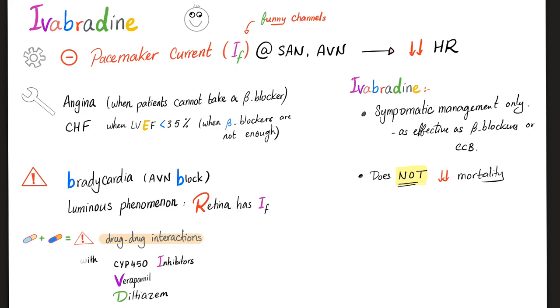Drug-drug interaction: do not give ivabradine with CYP450 inhibitors — the cytochrome P450 inhibitors. Why? Because there is an interaction; both will interact in the liver. Verapamil and diltiazem can cause similar interactions.